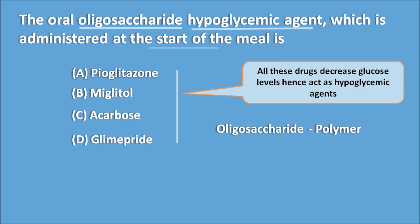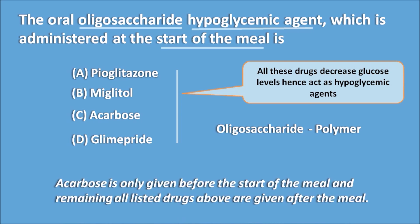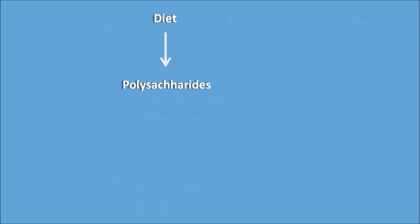The third clue is 'start of the meal.' Acarbose is the only drug given before or at the start of the meal; the remaining drugs are given after the meal. So acarbose is a polysaccharide-based agent given before the meal, making C the correct answer.